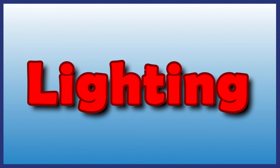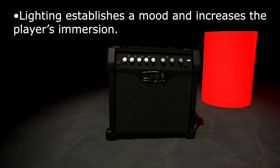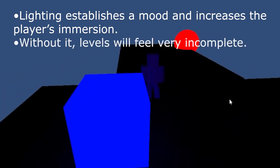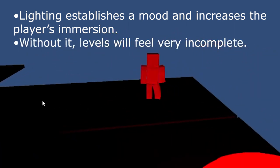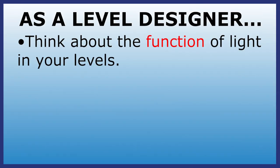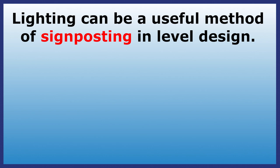One final time, let's get started. The first thing that you'll want to do is set up some proper lighting on your level. Lighting will help to establish a mood and increase the player's immersion while playing it. Without it, the level will feel incomplete, stale, and frankly uninteresting to look at. Above all, you should aim to think about the function of the lighting on your level as a way to enhance the player's experience. In particular, it can be a useful method of signposting to help guide your players towards important parts of your level.